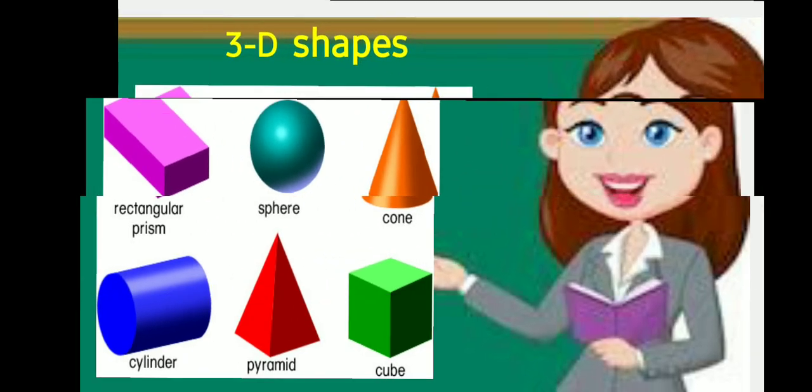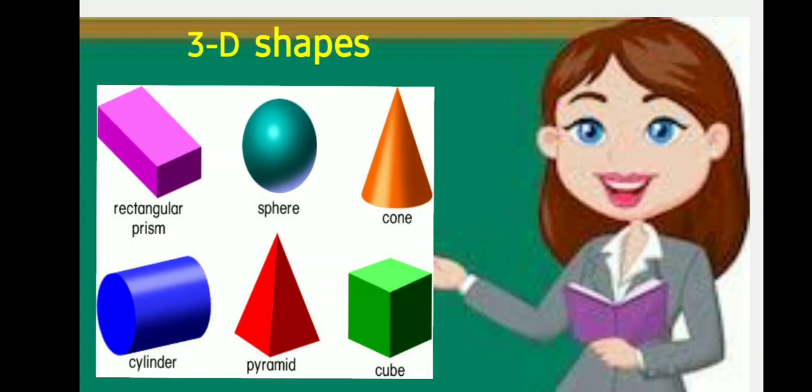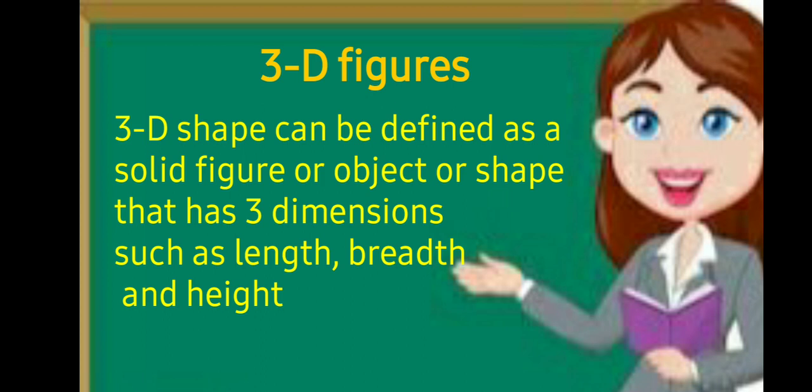The next one is about 3D shapes. Some examples are: rectangular prism, sphere, cone, cylinder, pyramid and cube. 3D figures or shapes can be defined as a solid figure or object that has three dimensions — length, breadth and height.